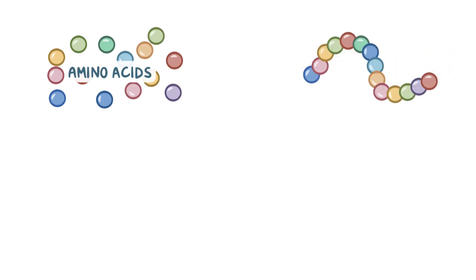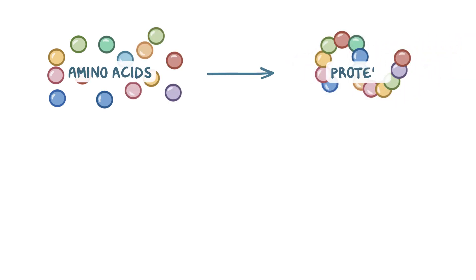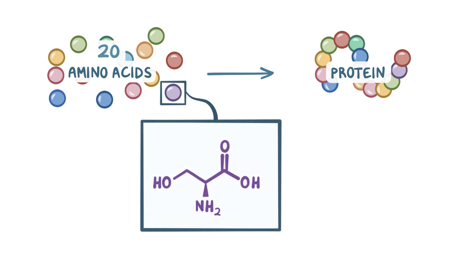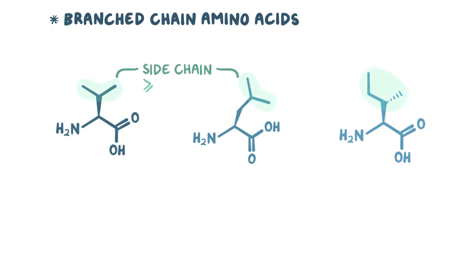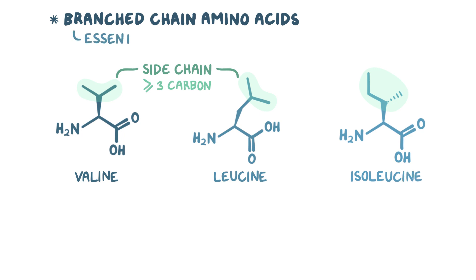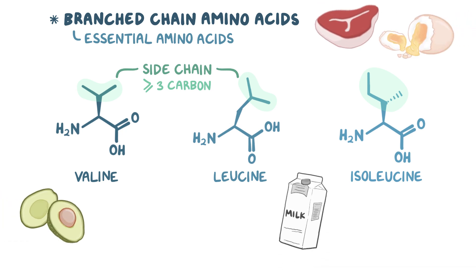Amino acids are the basic building blocks that make up proteins. There are 20 amino acids used in the human body and they all contain a carboxyl group and an amine group. The branched-chain amino acids have a side chain containing three or more carbons and they include valine, leucine, and isoleucine. These three are essential amino acids, meaning our bodies can't create them, so you have to get them through protein-rich foods like meat, eggs, dairy, avocados, and beans.